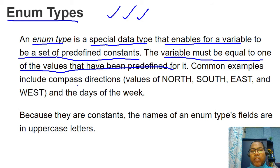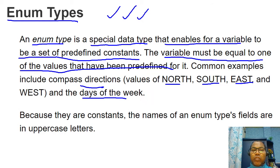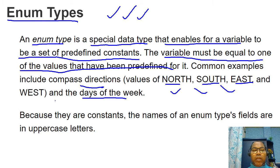The variable must be equal to one of the values predefined for it. A common example is directions — north, south, east, and west — or the days of the week: Monday, Tuesday, Wednesday, and so on. In these cases, we know the preset values, so instead of declaring individual constants like constant one, constant two, constant three, we can declare one enum type that holds all those predefined values.